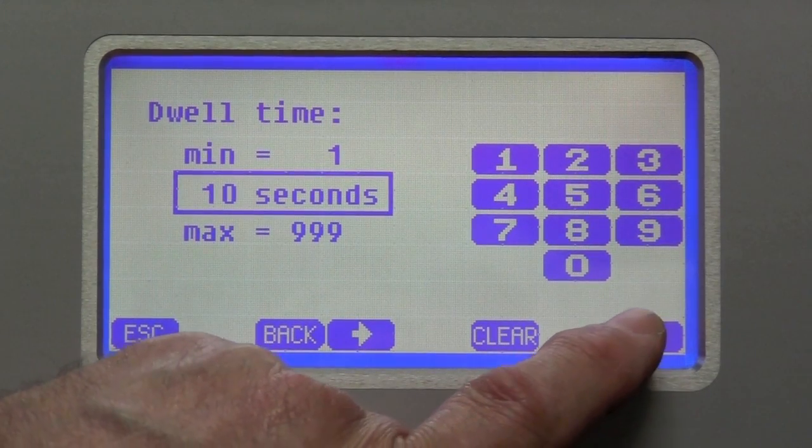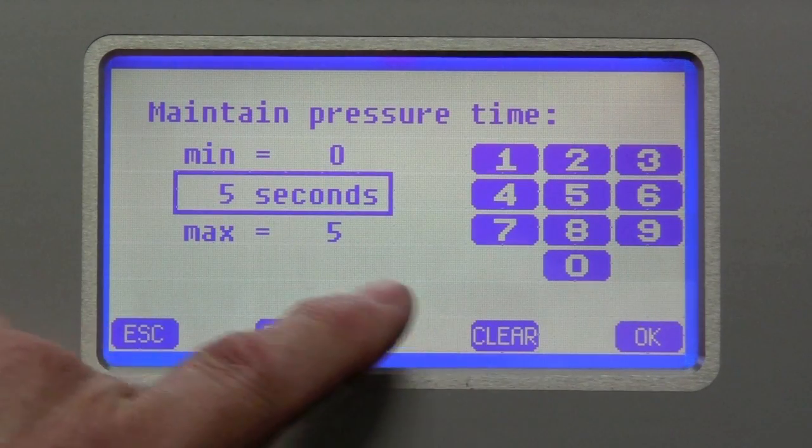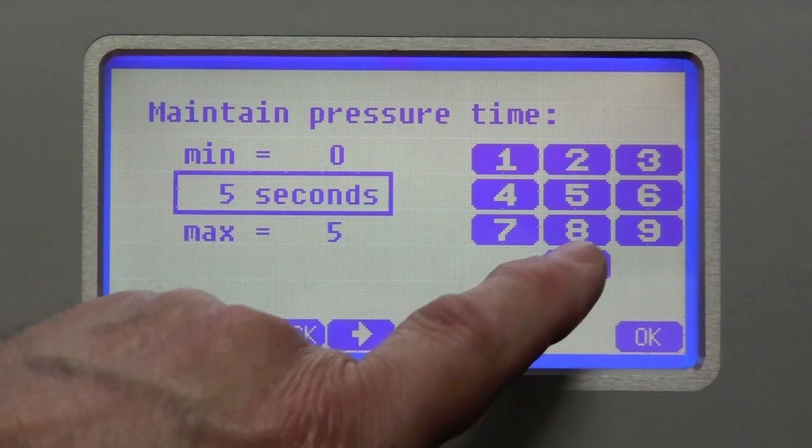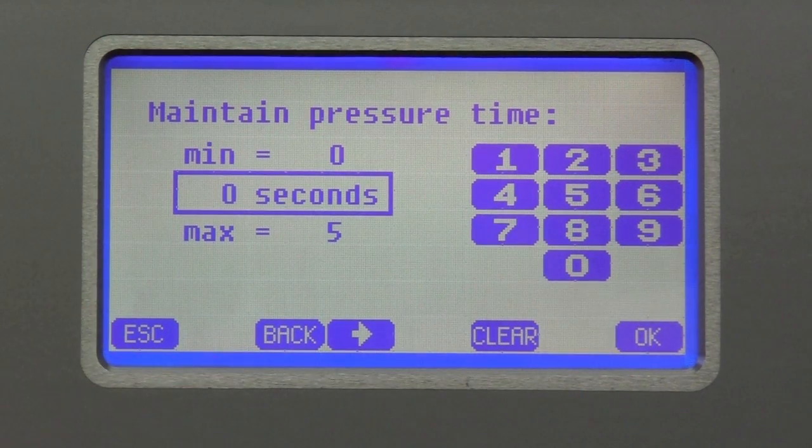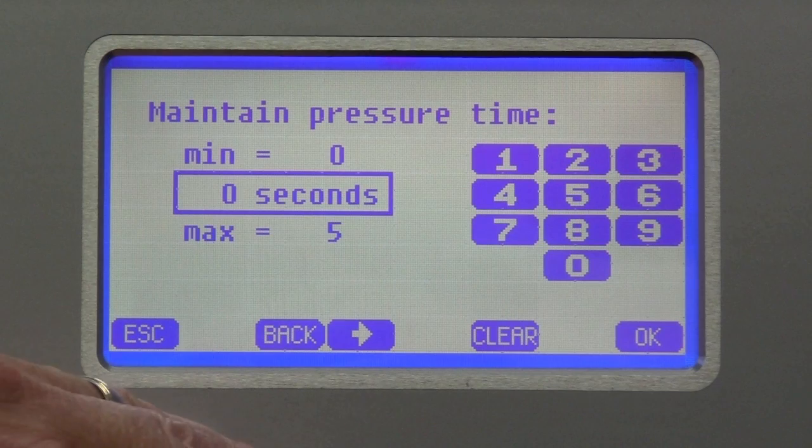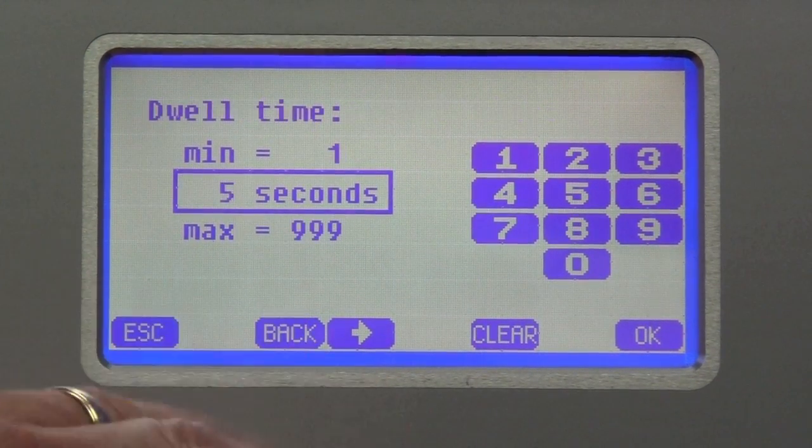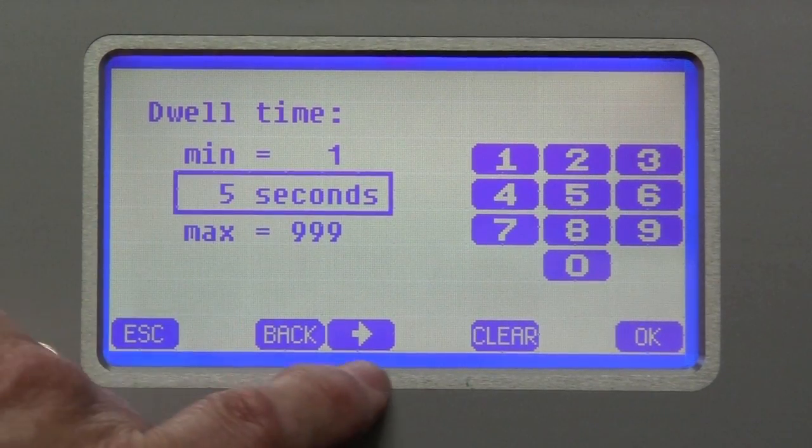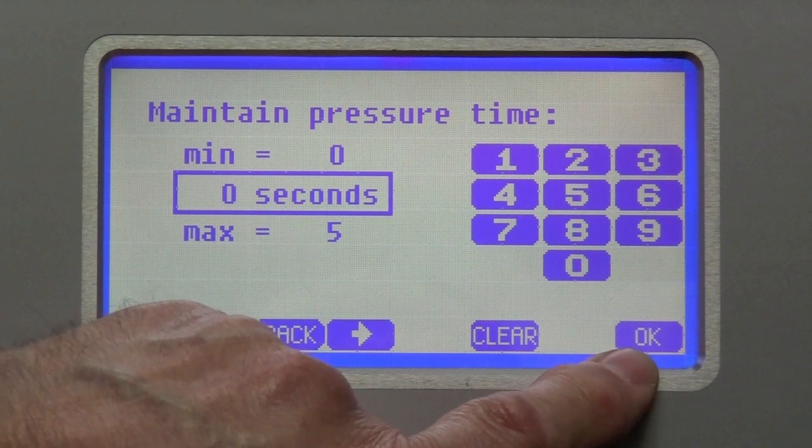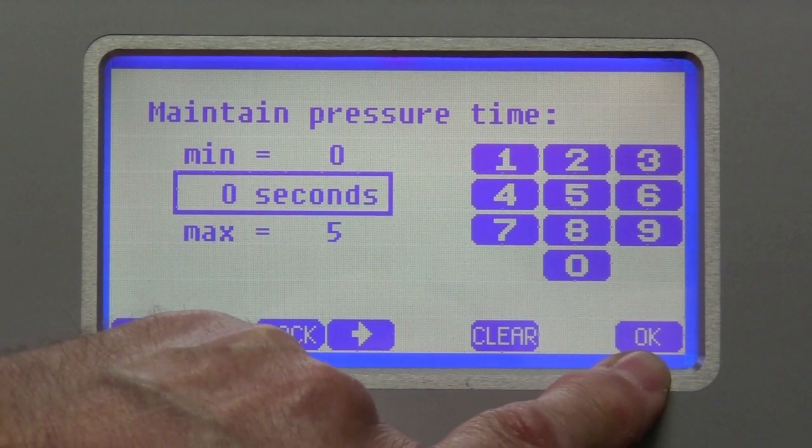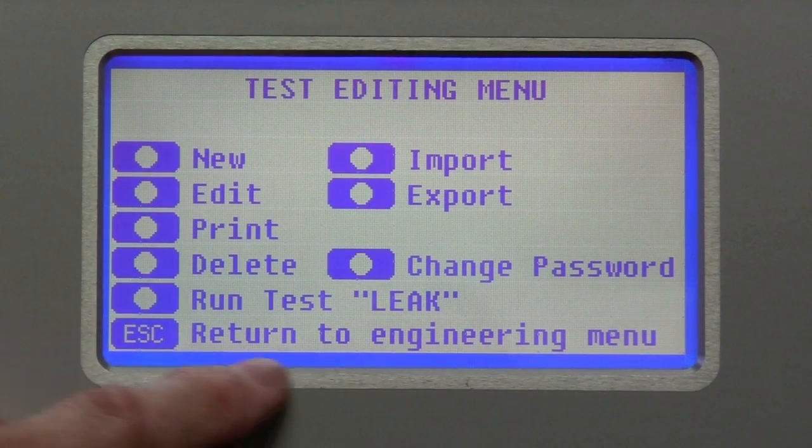The dwell time we're going to leave at, we're going to put at 5 seconds. And we're going to have the maintain be 0. So what that means is that it will go to the target pressure and it will wait there for 5 seconds. It'll wait there for 5 seconds and then we'll make the maintain 0. So during that period of time, it will not maintain the pressure. And so if the pressure drops, there must be a leak.